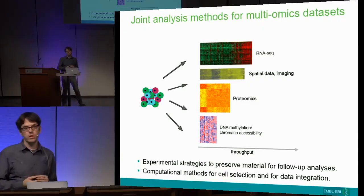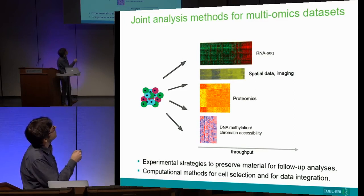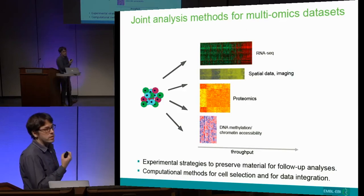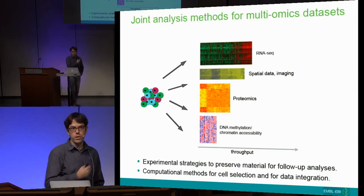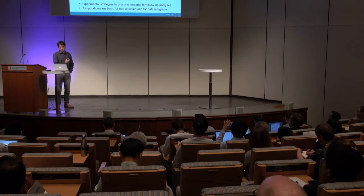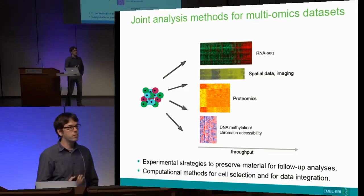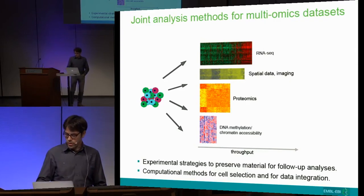I want to end with a bird's eye view of throughput - how many cells in rows we can profile using RNA-seq, spatial methods, proteomics, and epigenome variation datasets, which are perhaps least high-throughput. The scales about what's high and low throughput change day by day, but the key point is we need both experimental procedures - for example preserved samples - and computational methods to guide cell selection, and then analysis of these patchy datasets with lots of missing values. Not every cell will have every layer of information, but several cells will have multiple layers to be tied together and integrated.